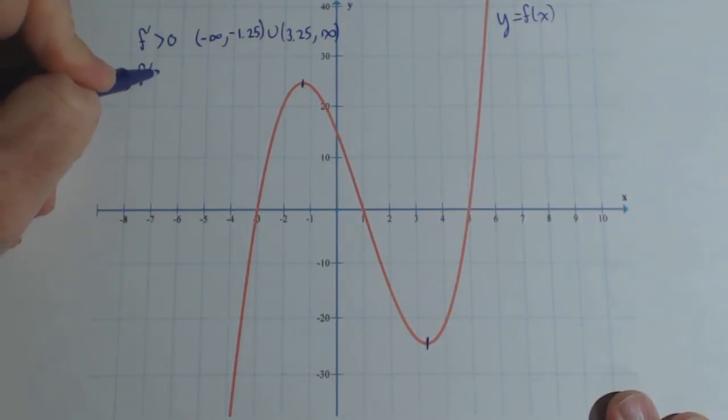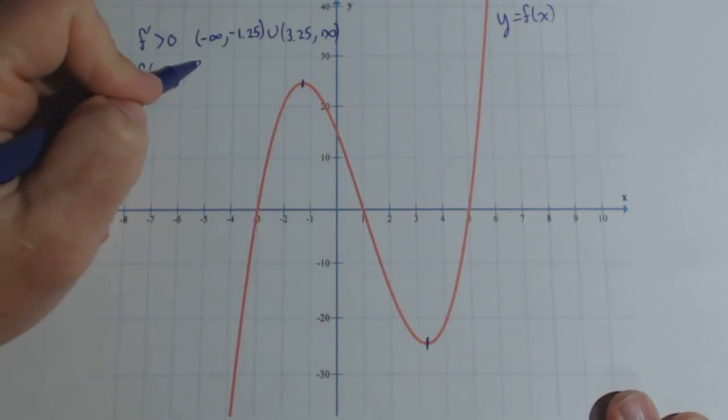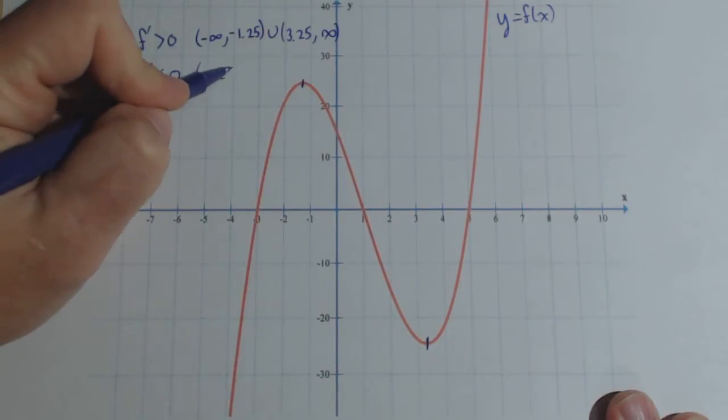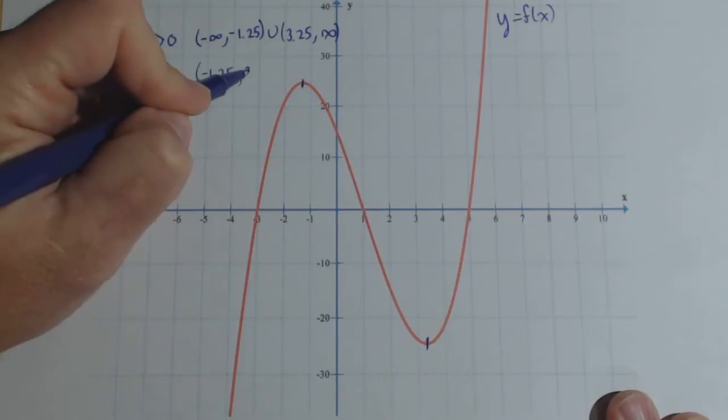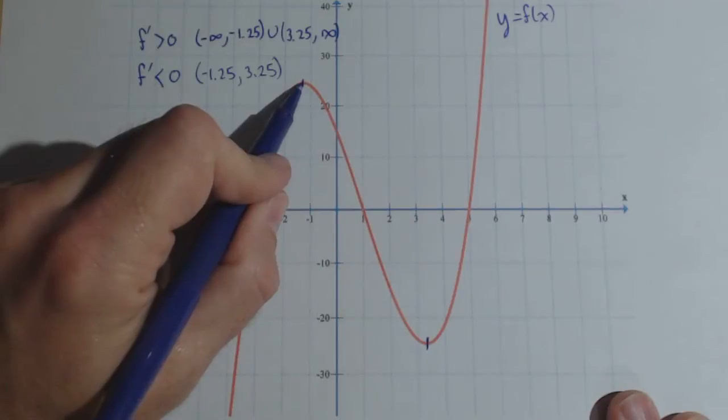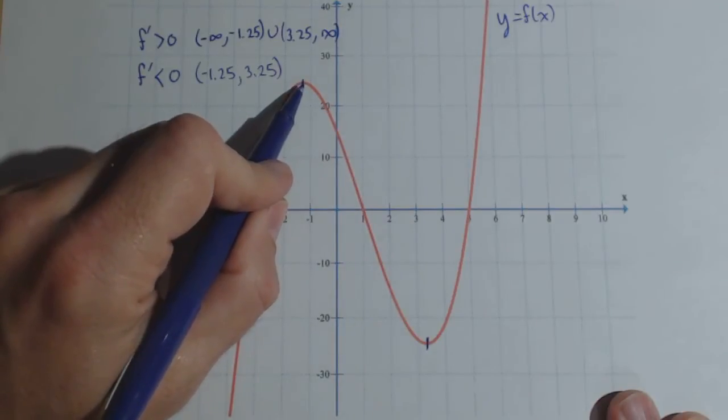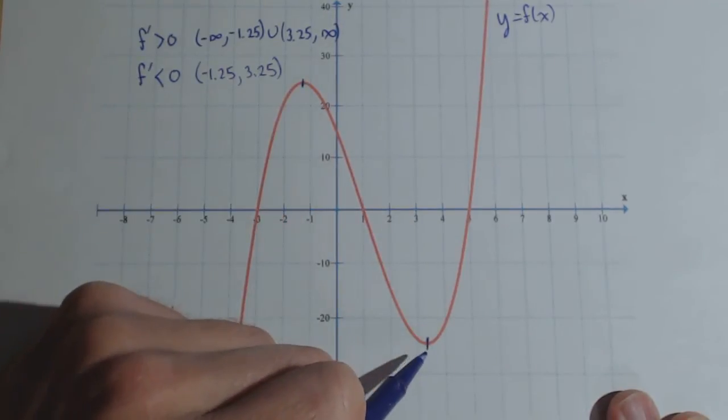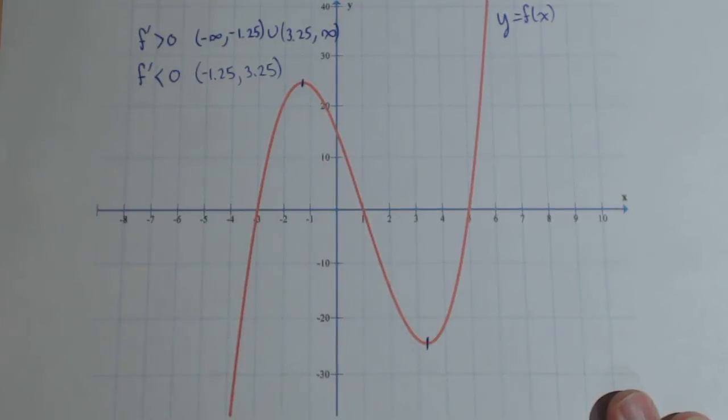So if we wanted the intervals where the derivative is negative, it's going to be in between there. So negative 1.25 to 3.25. We'll always use parentheses with these, because at these points it's neither increasing or decreasing. It's the one instant where it changes, or where the derivative is zero.